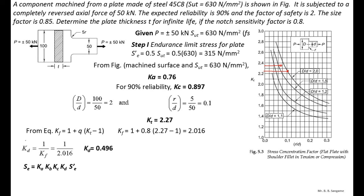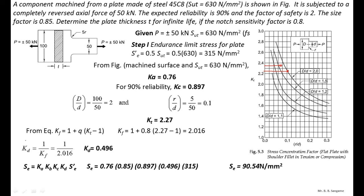The endurance limit Se is given by Se = Ka × Kb × Kc × Kd × S'e. Substituting Ka = 0.76, Kb = 0.85, Kc = 0.897, Kd = 0.496, and S'e = 315 N/mm², we get Se = 90.54 N/mm².